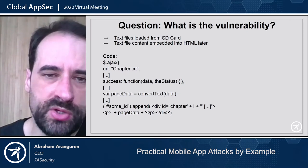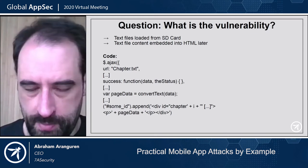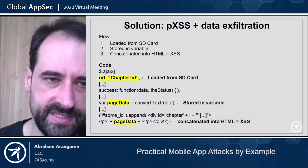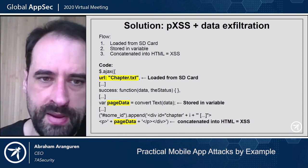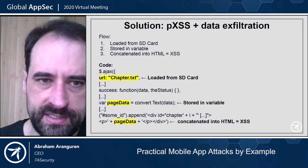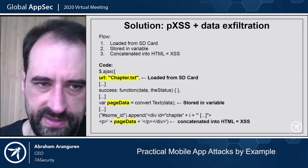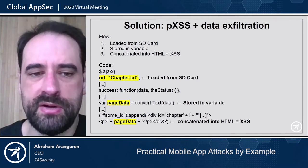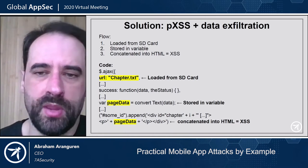Take a look at this — pause the video and try to guess what the vulnerability is. The problem here is that the application is reading text files from the SD card, loading the text into a variable called 'pageData', and then that variable is being concatenated into HTML without any output encoding whatsoever. This results in XSS.